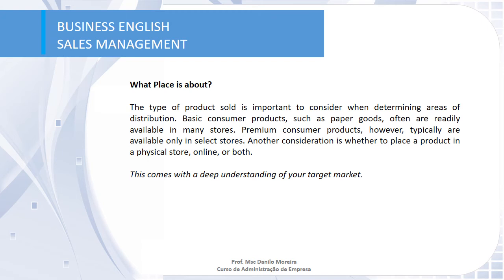Place is about the type of product sold and where it is distributed. It's not only about areas to distribute, but also places to store it — such as a warehouse — the stores where your product will be sold, whether online or in a physical store or both, and the distribution channels you are going to use. All these things are related to place.